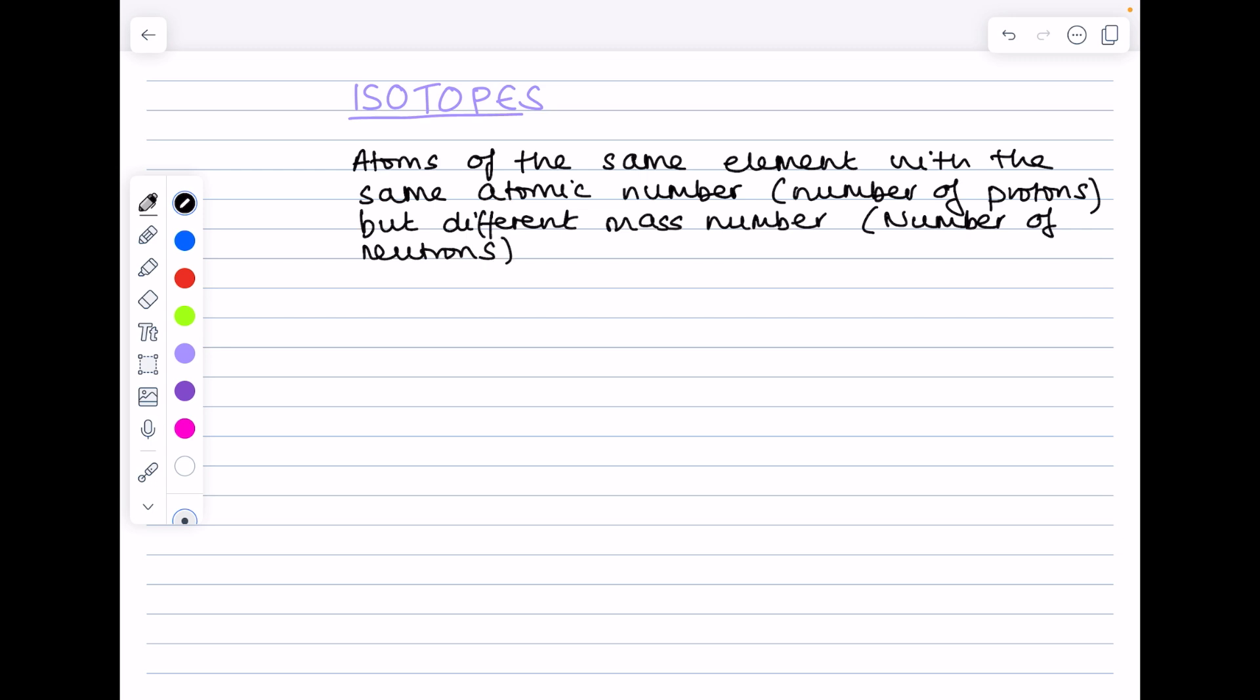For example, chlorine has an isotope which has a mass number of 35, has a second isotope which has a mass number of 37. What's the difference between these two isotopes? Well, it's two neutrons. Chlorine-37 has two extra neutrons, which makes sense if we consider that definition.